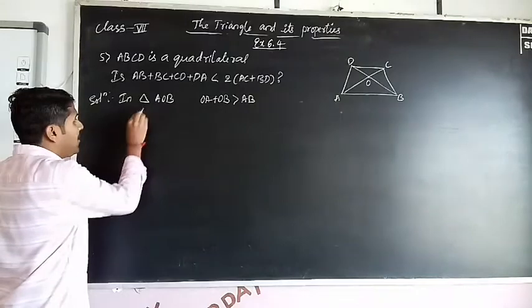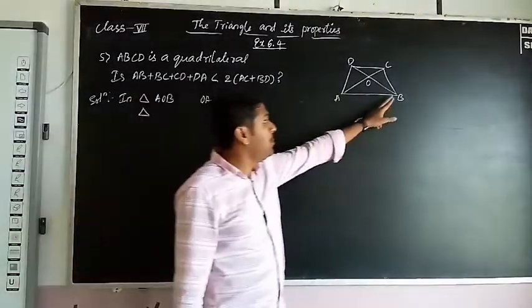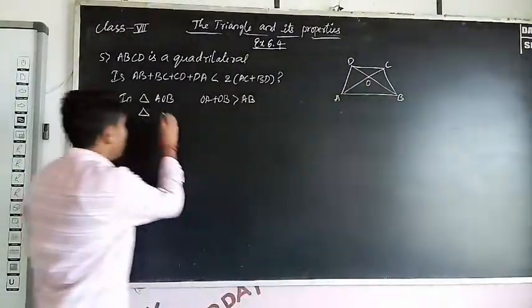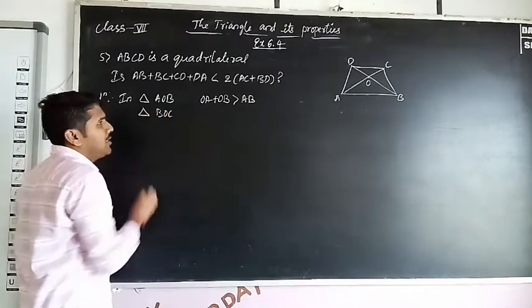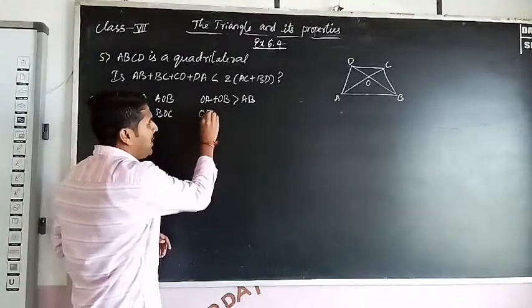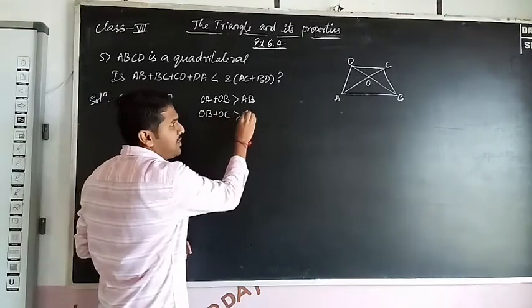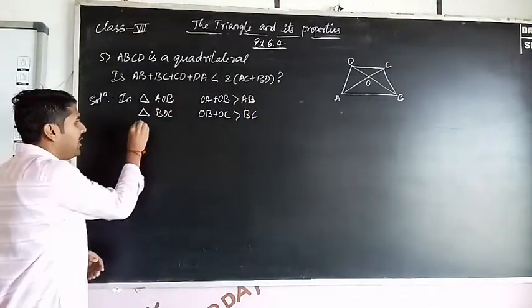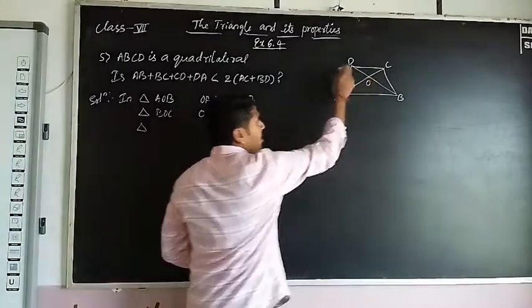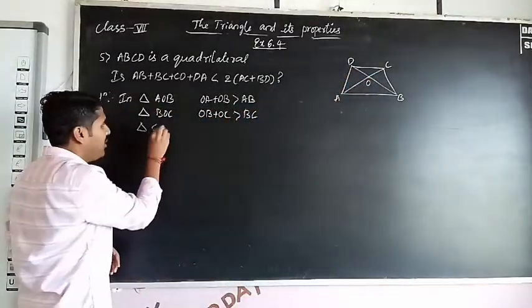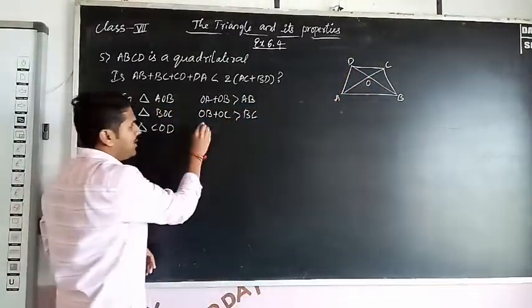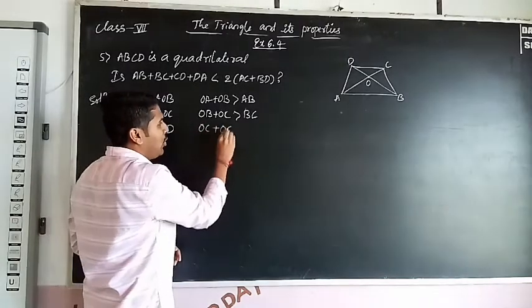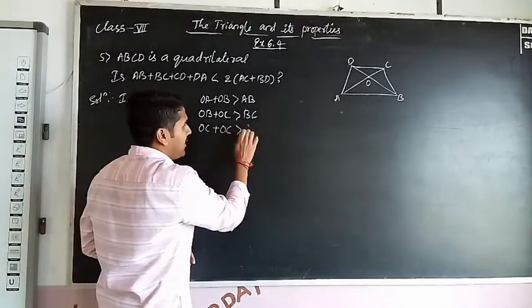Next in a triangle BOC, OB + OC is greater than BC. Next in a triangle COD, OC + OD is greater than CD.